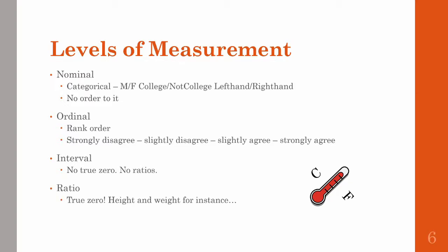Finally we get to the ratio level. This involves assigning scores in such a way that there is a true zero point that represents the complete absence of the quantity. Height is a good example for this. 5 inches describes the height of something, but 0 inches does describe no height at all. So, ratio is considered to be the top level of measurement.